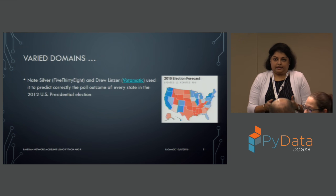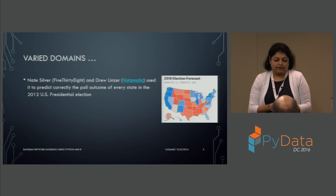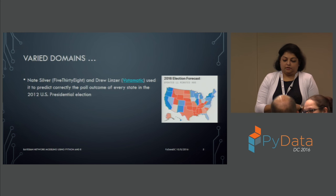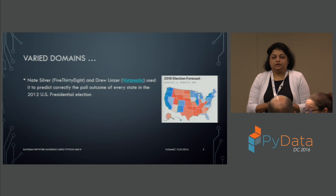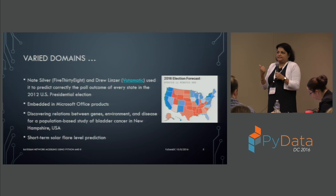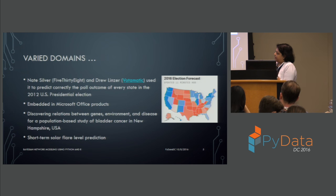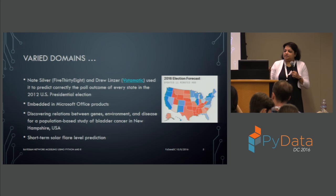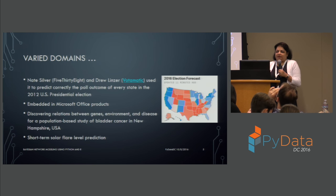Bayesian methods have also been used in election prediction and polls. Nate Silver from the 538 Blog and Drew Lenzo from Automatic use Bayesian methods for prediction. Of course they use multiple techniques, but Bayesian network is one of the prime ones. Other applications include Microsoft Office products — Office Assist uses Bayesian modeling — as well as discovering relations between genes, environment, and disease propagation for a given population.